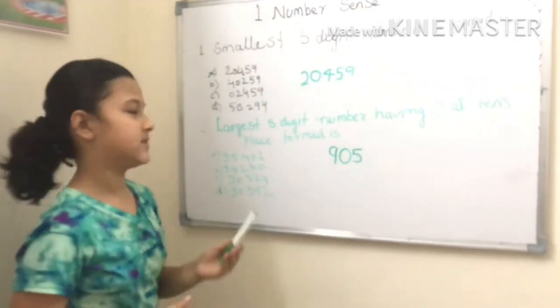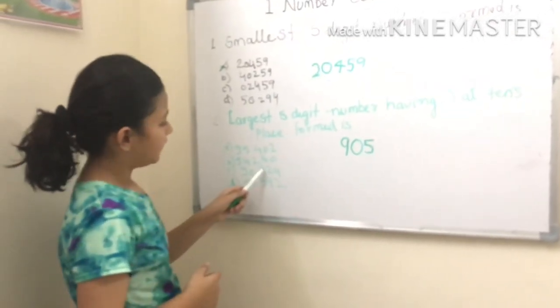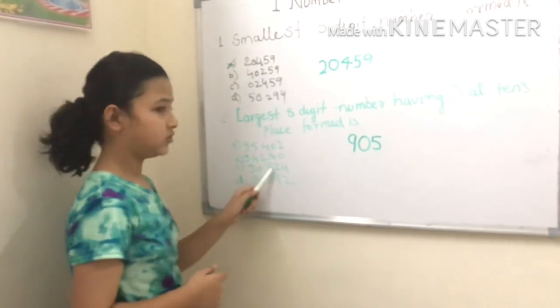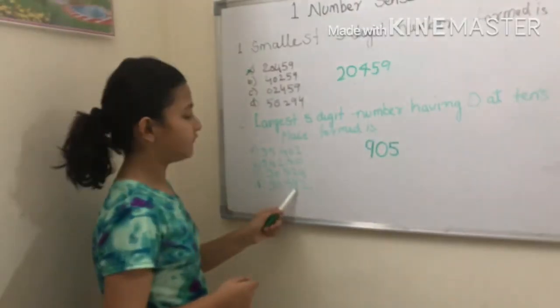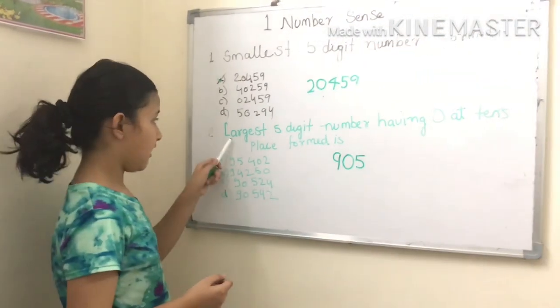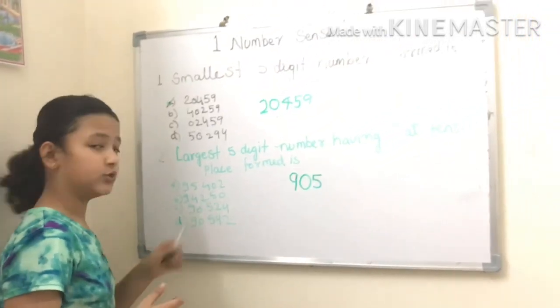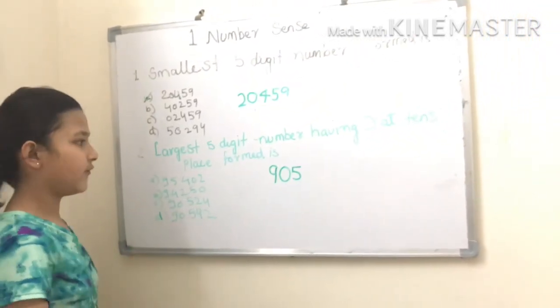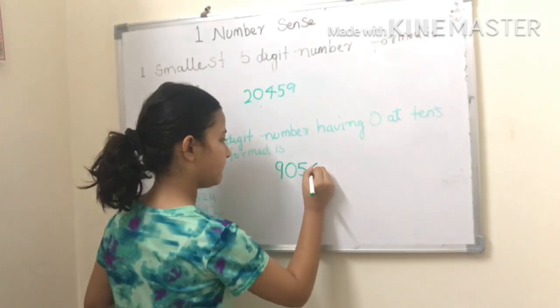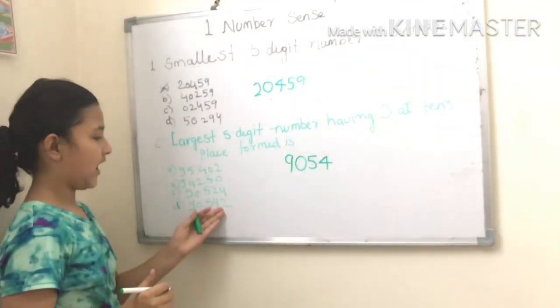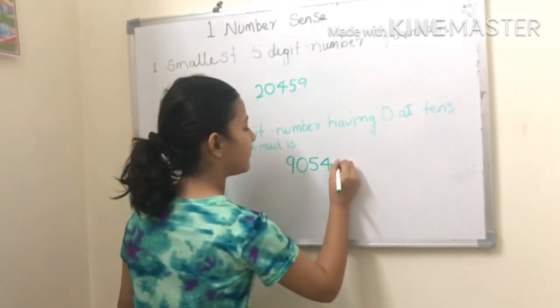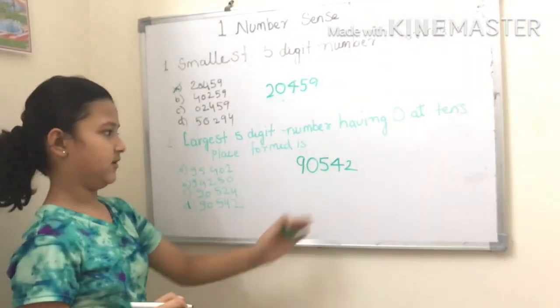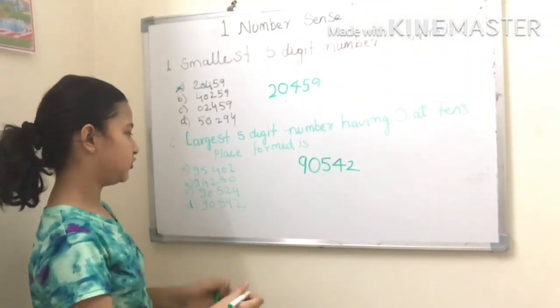Now I'll move to the next number. I have under C two, and then D four. Four is largest than two, so I'll take four. Then last is two. So here's your answer: nine, zero, five, four, two.